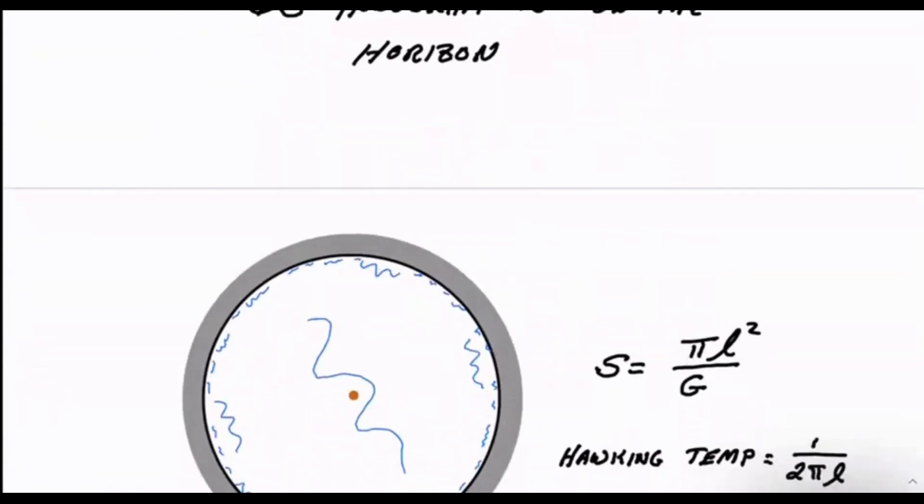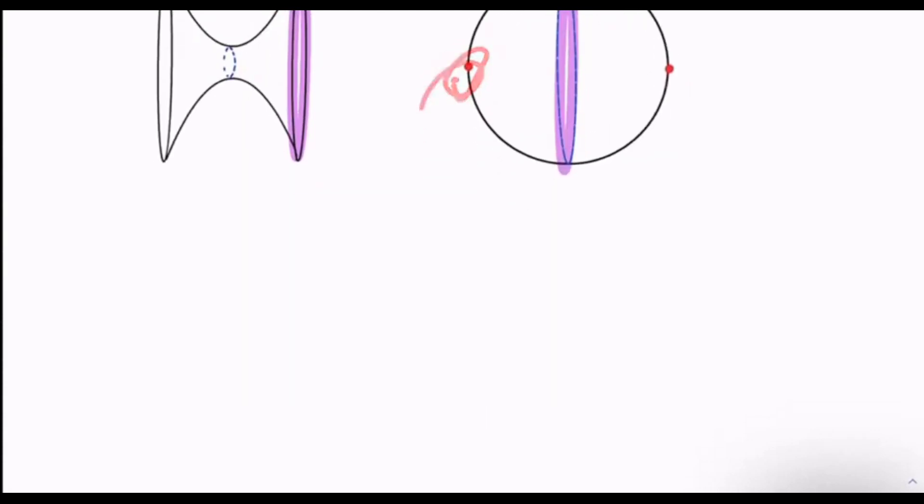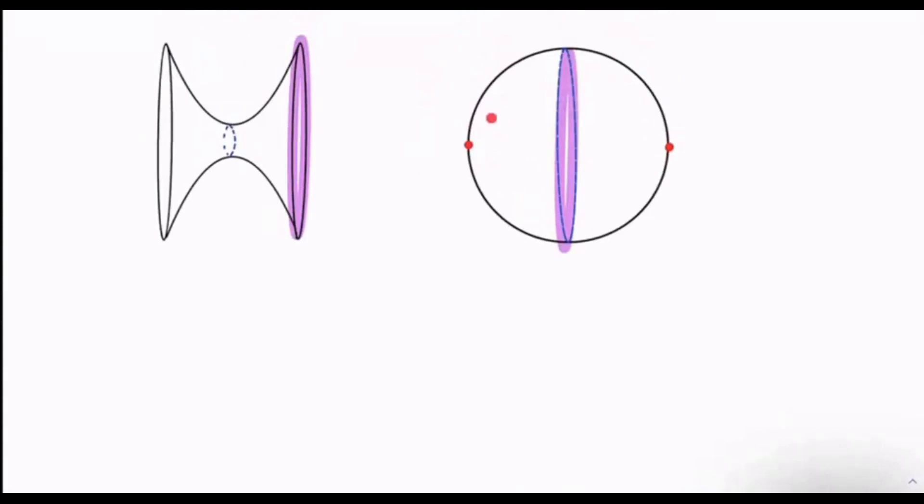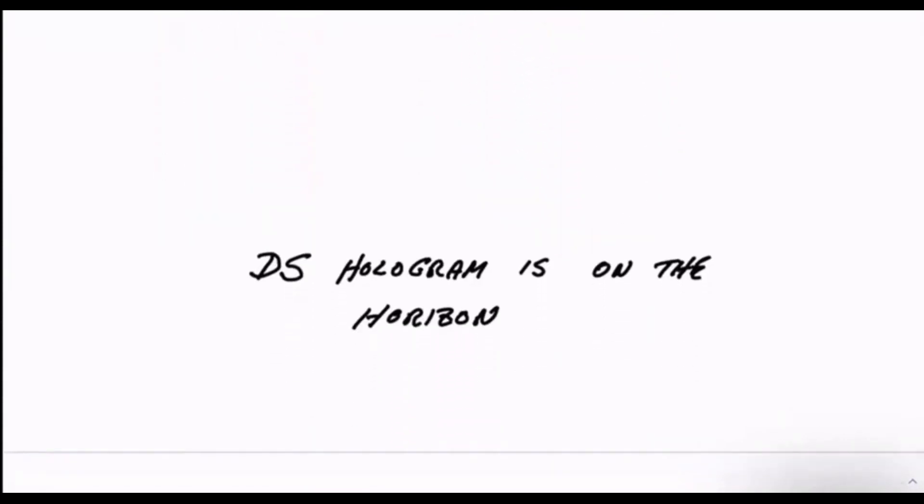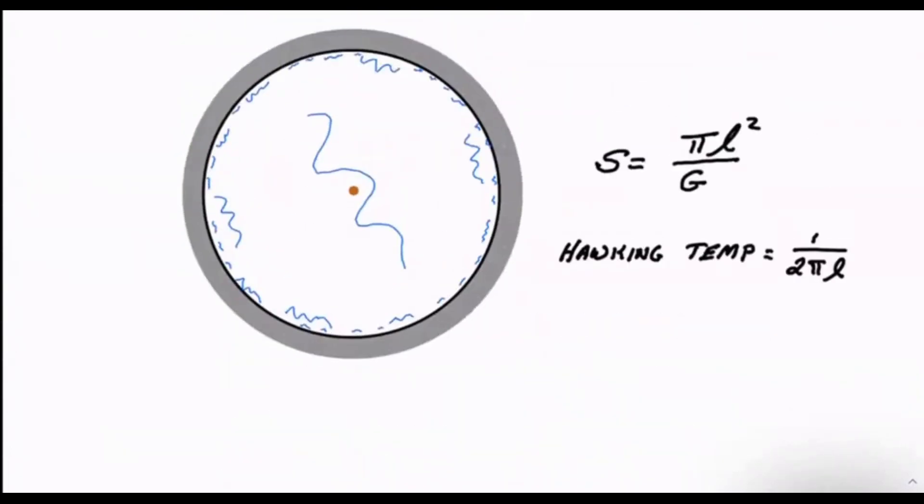What does physics look like in de Sitter space from the point of view of an observer as far from the horizon as possible? That would be the fellow over here, for example, Bob. Alice, of course, is over here. Forget Alice. Bob is over here. And he's looking at the world. He looks out away from him and he sees the horizon. What does that world look like? He looks around him and he sees a horizon.